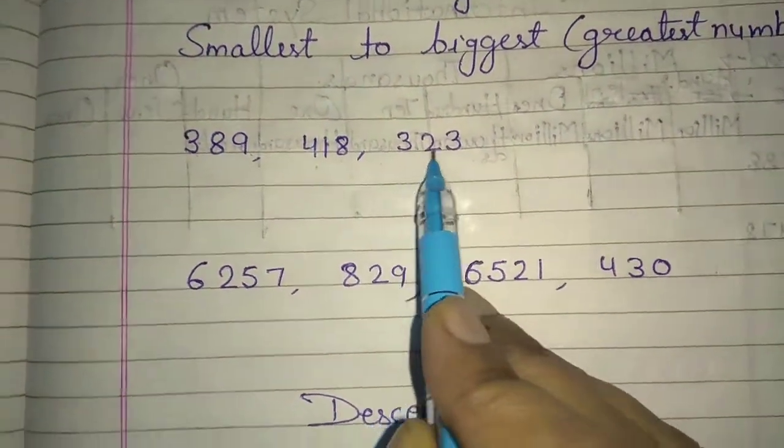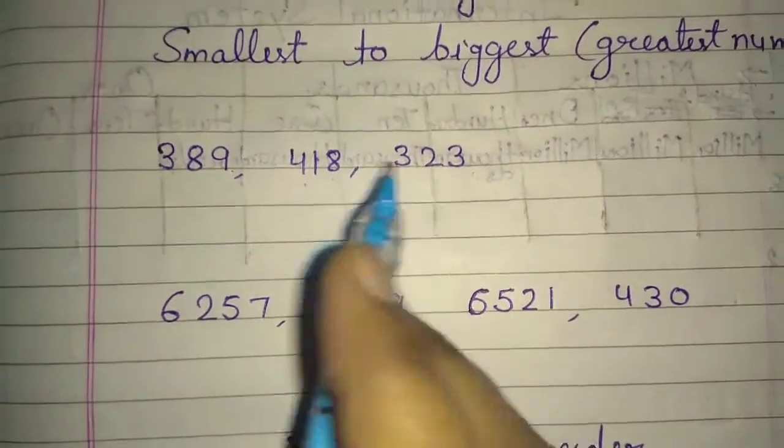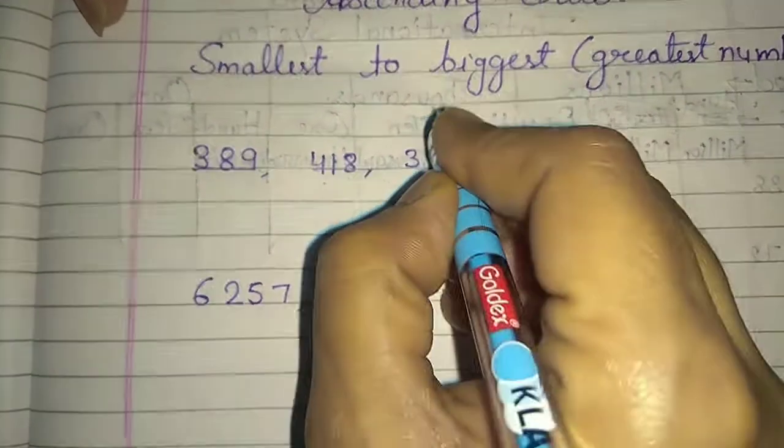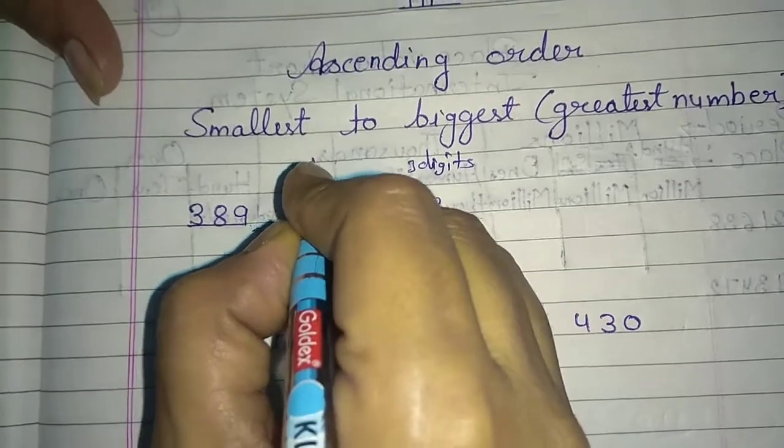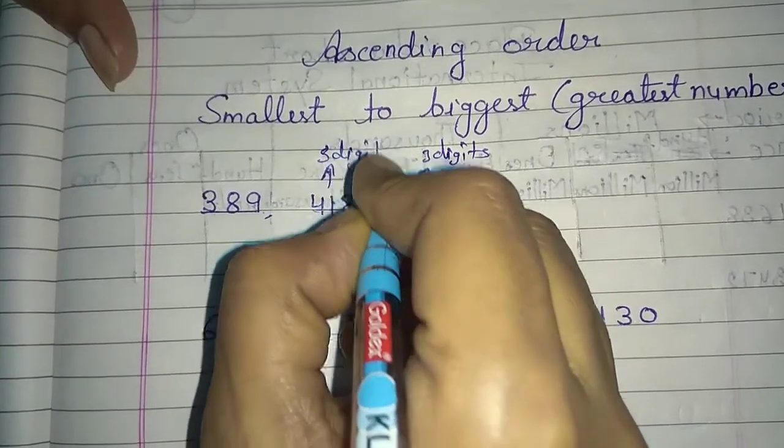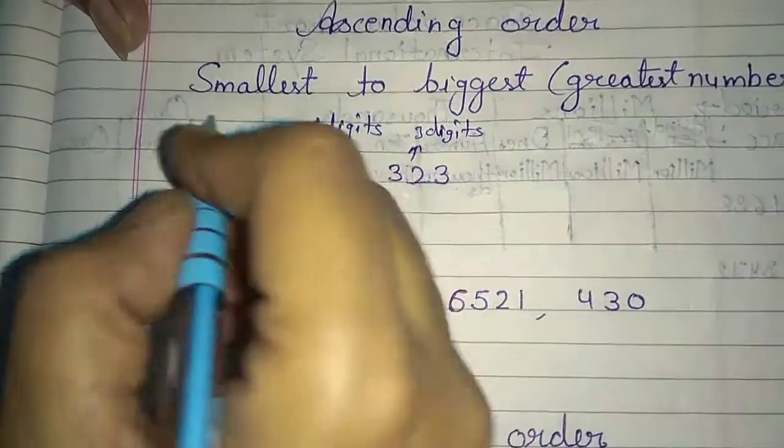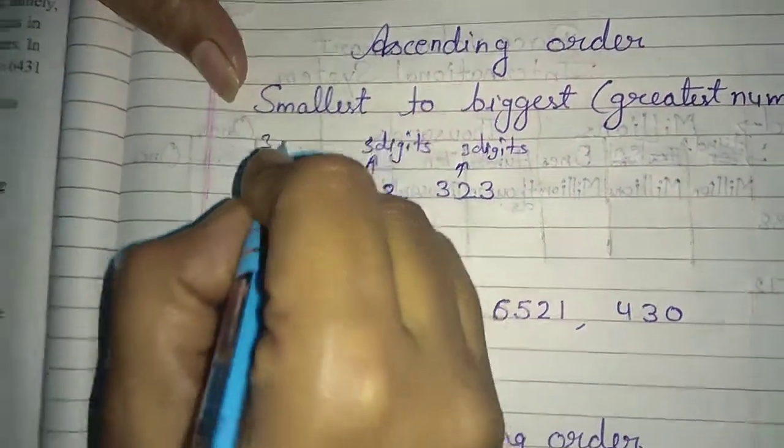389, 418 and 323. See all the numbers. Now, in these three numbers, what do you mean by 3-3 digits? How many digits? 3-3 digits. Right? The compare of numbers, what do you mean by the rules? Count of digits. Same digits. See the next digits. 3 digits.